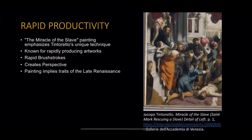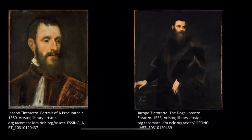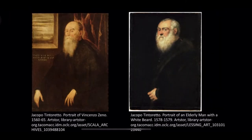Jason Farago from the New York Times also states that Tintoretto painted a few great mythological scenes and several acute portraits of old bearded men, but at his core Tintoretto was a religious artist, far more so than Titian and Veronese. This is true, as a lot of his artworks depict a higher power from above raining down golden light. The painting to the left is a portrait of a procurator by Tintoretto. The painting to the right is called the Doge Lorenzo Soranzo, created through oil on canvas. On the left is the portrait of Vincenzo Zeno, and on the right is a portrait of an elderly man with a white beard — both portraits referencing what Farago said about Tintoretto's acute portraits of old bearded men.